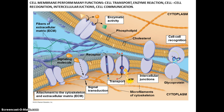You have intracellular junctions — certain cells are tightly packed and stay in one place. And cell communication, also called cell signaling, involves triggering a cell to make a certain protein or function in a certain way.